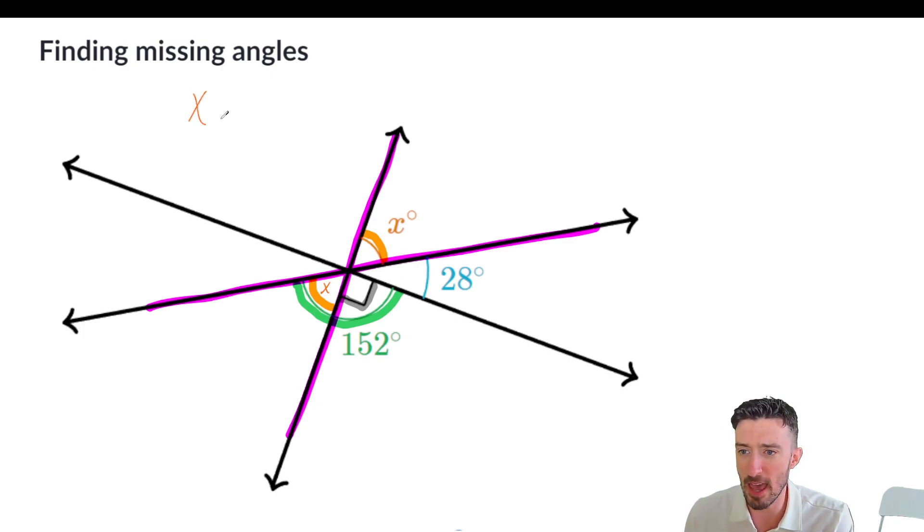That means we're going to write X plus 90 equals the larger angle, the 152. 152 contains the X and the 90. So that means X plus 90 equals 152.